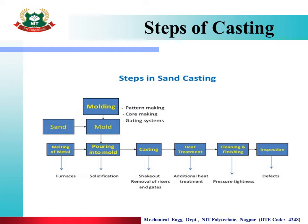Now the steps of casting: first, sand preparation — what should we do? Make the mold. Second, melting of metals — we should melt the metal in a furnace to produce molten metal. Third, molding — we should prepare the mold cavity using the pattern, core, and gating system, as introduced in the casting overview.